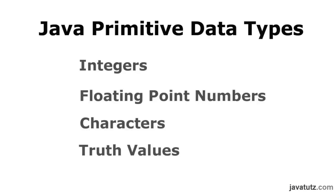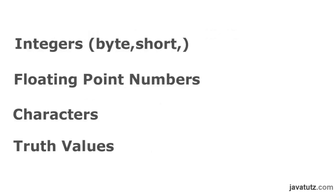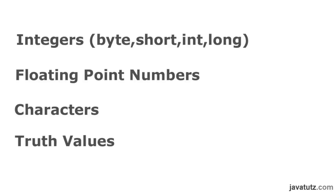Alright, to represent integers, depending on the size of the integer, we have four data types: byte, short, int, and long. Think about them in this way — they are like crates to store dogs of different sizes, like Yorkshire Terrier, Welsh Springer Spaniel, German Shepherd, and Spanish Mastiff, our friend Frank found earlier.